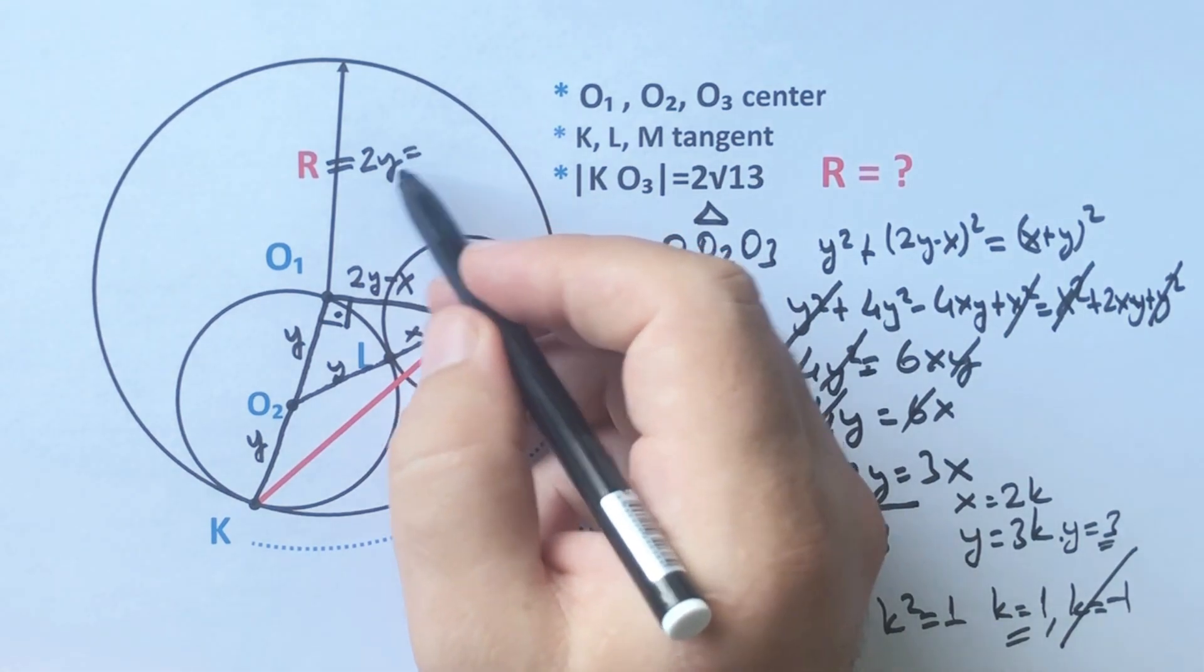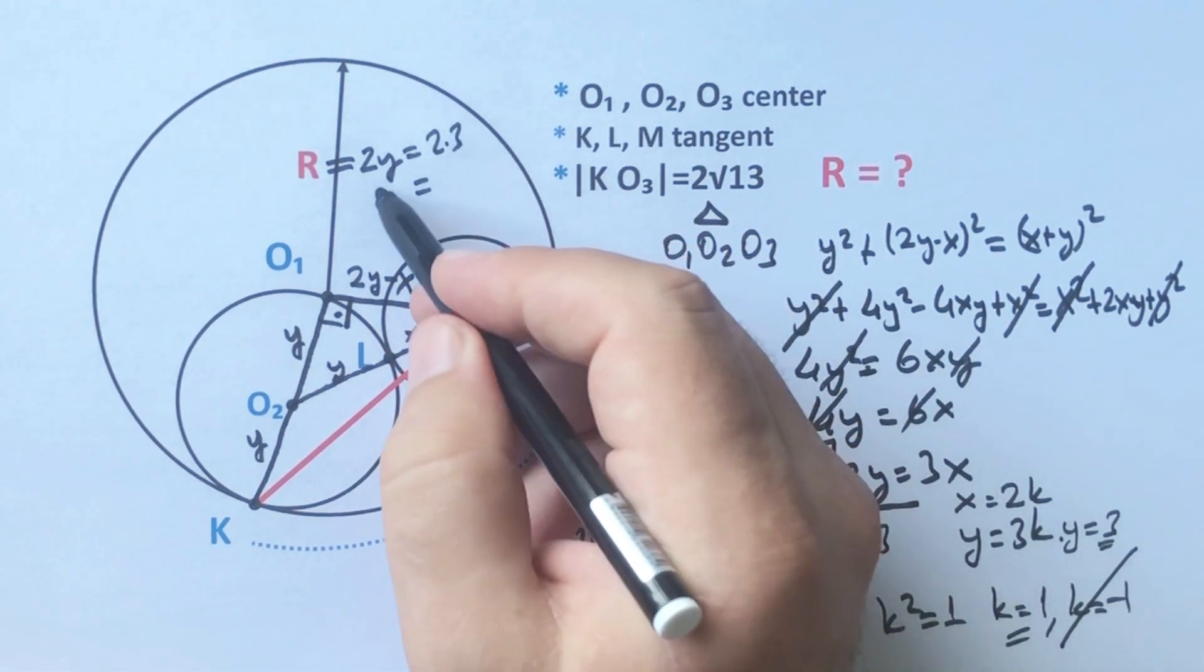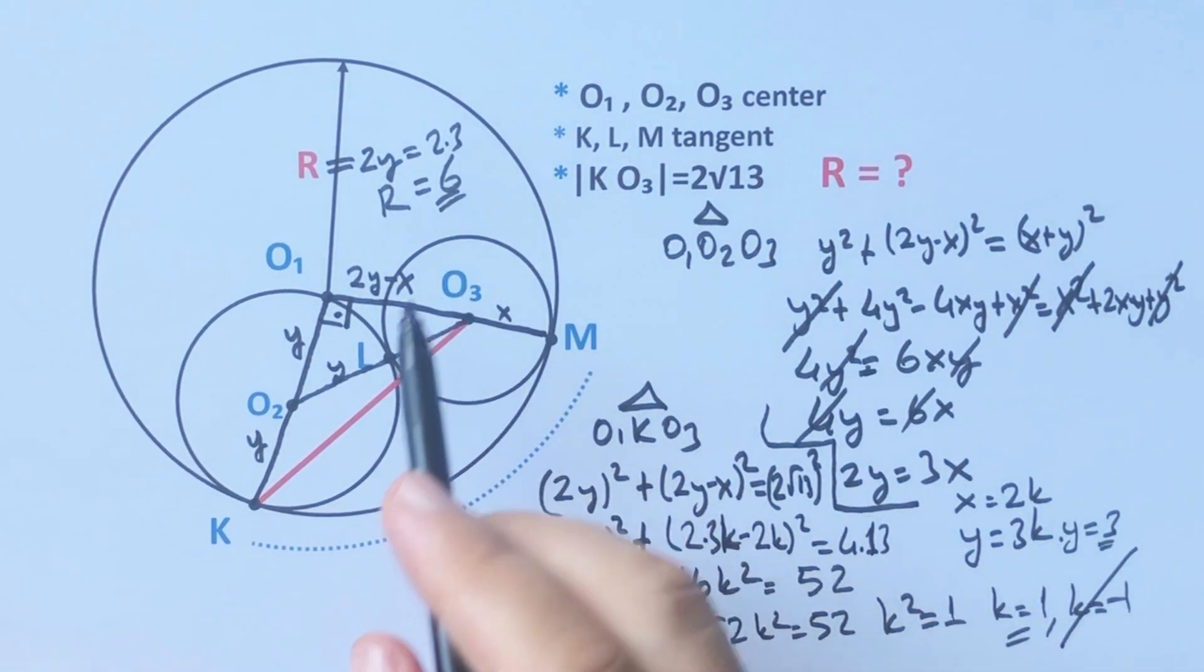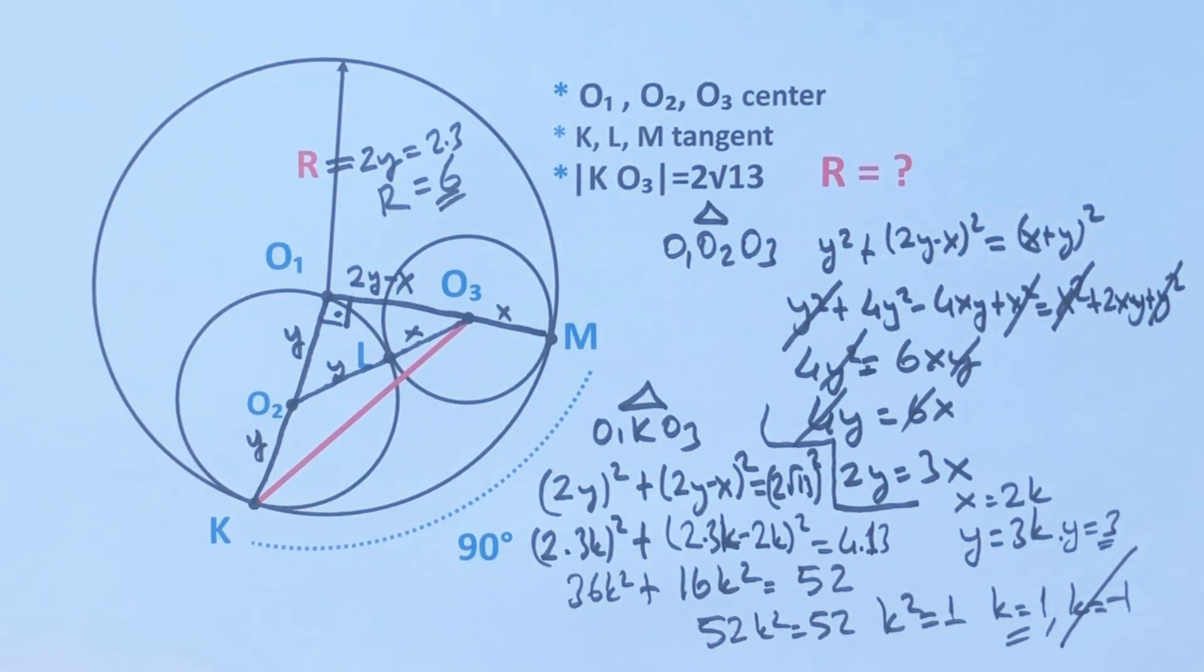And then the radius of the big circle equals 6 units. Thanks for watching, and if you want more videos like this, please subscribe to my channel. Bye!